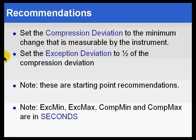Now, finally, we get to the point at which we're ready to make some recommendations as to what you set for the compression and exception deviation. In general, for the compression deviation, we suggest you set it to the minimum change that's measurable by the instrument and then simply set the exception deviation to half of that compression deviation. Over the years, that seems to give people satisfactory results.